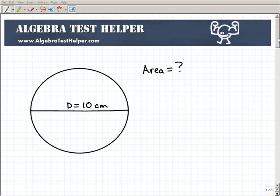It's actually pretty easy if you know how to use the formula. So it's always good to know what the formula is. The area of a circle is equal to pi r squared. Let's take a look at what that formula means.